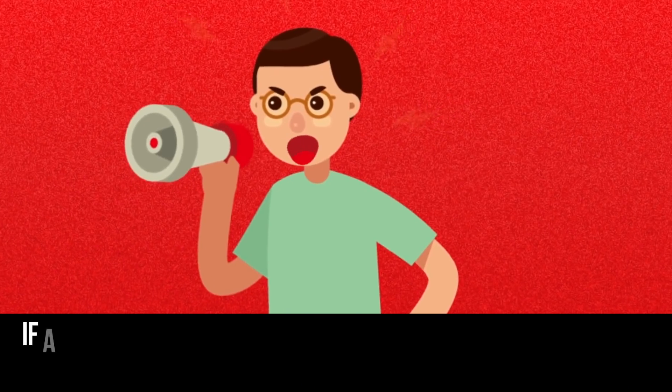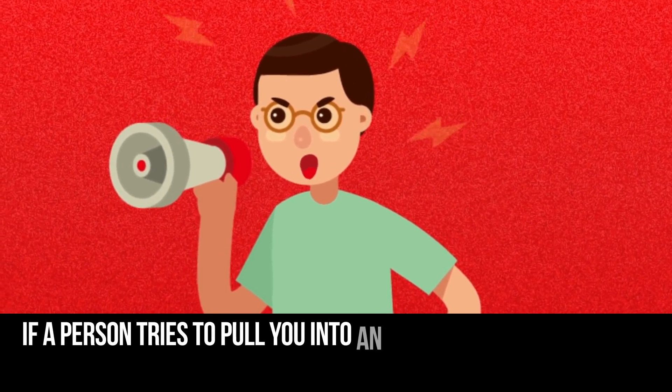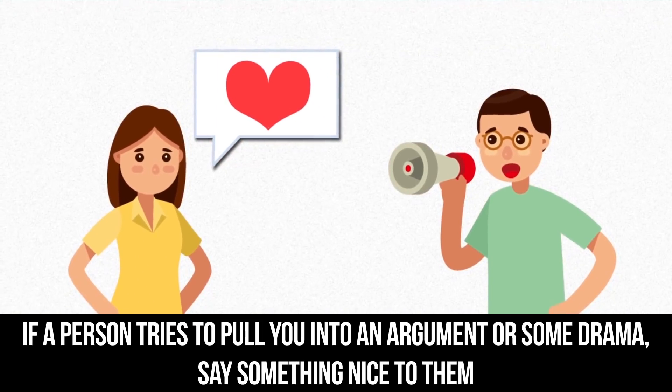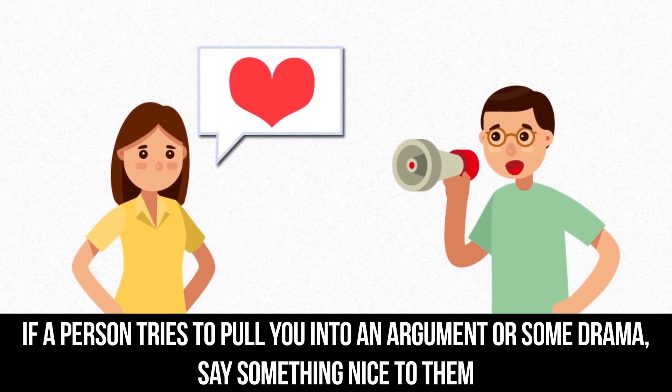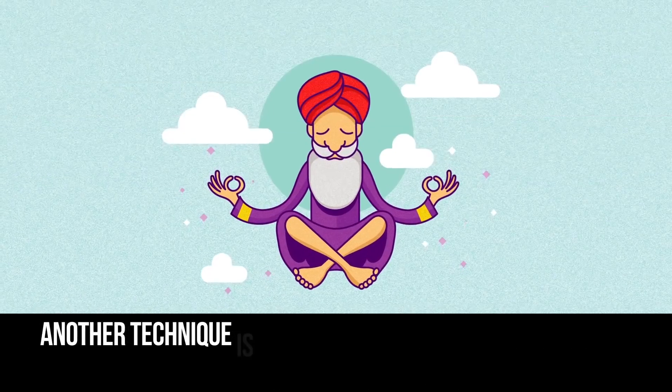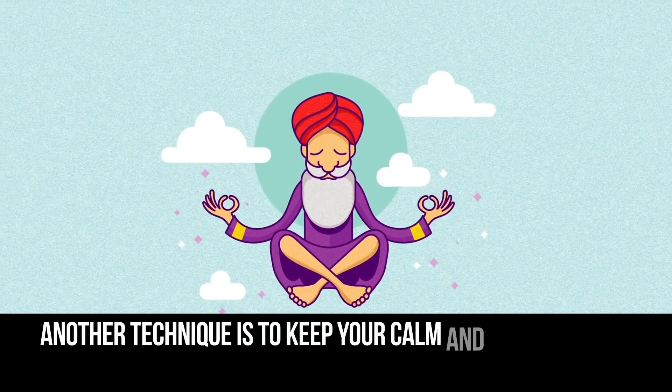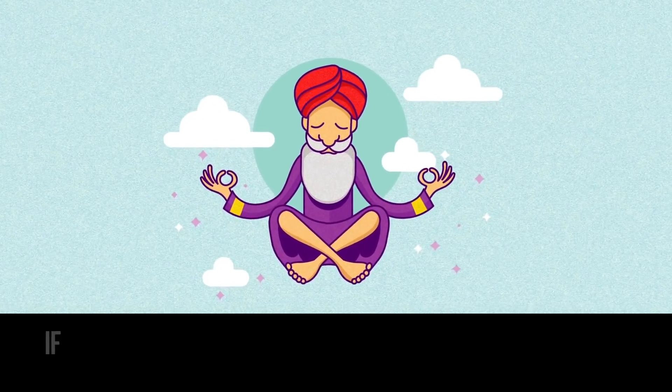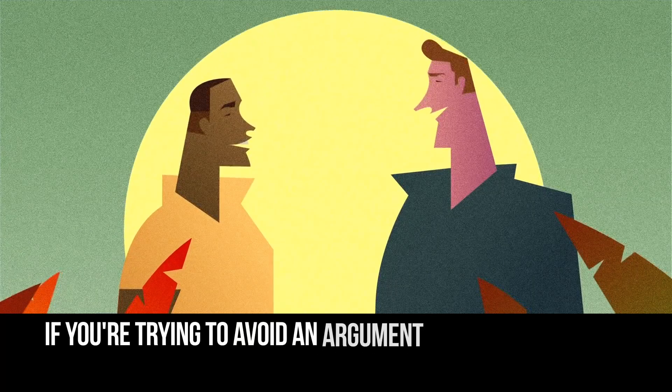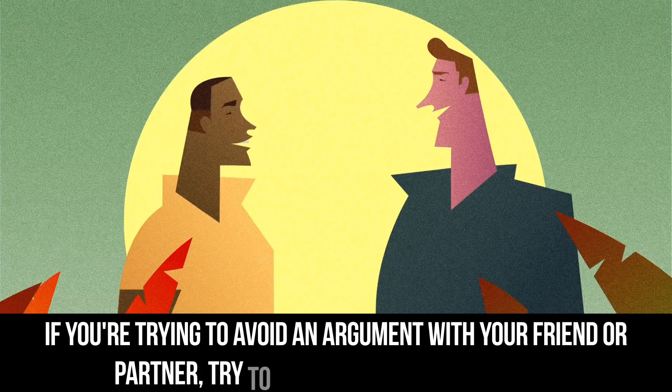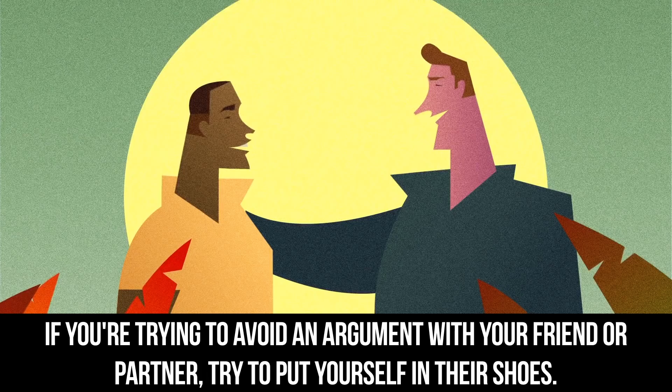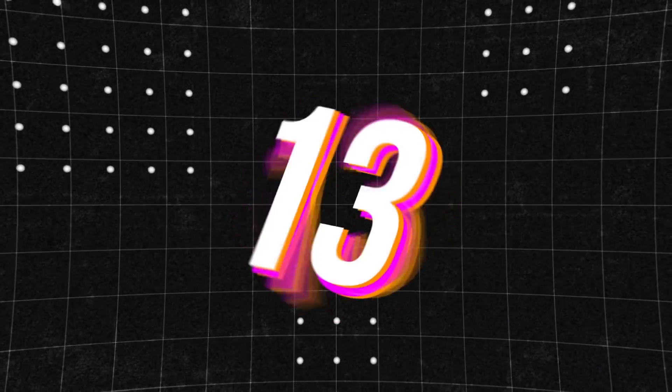Number 12. If a person tries to pull you into an argument or some kind of drama, say something nice to them. The old kill-em-with-kindness trick really does stop them in their tracks. Another technique is to keep your calm and remain silent. There's nothing more irritating than being ignored. However, if you're trying to avoid an argument with your friend or partner, try to put yourself in their shoes. This can help you understand if there's some point in their objections that you're missing.